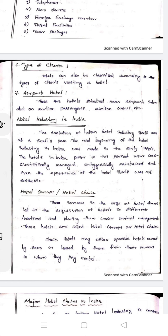Then next is types of clients. We also have different types of clients. Then there is the airport hotel. We also have airline crews. This means airlines are working in aerosystems. The airport hotel is located near the airport and serves anyone staying nearby.